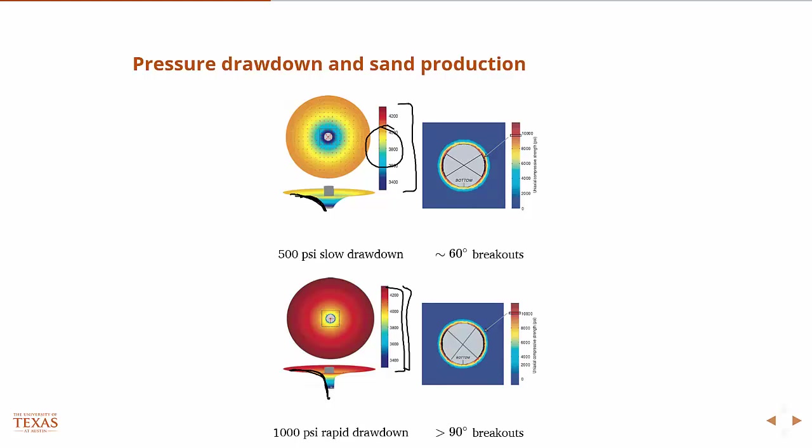And in those two cases, if you look at the failure of the wellbore and do a prediction of the breakouts via the failure model, then in this 500 psi slow drawdown case, you have something like on the order of breakouts that are on the order of 60 degrees. Versus over here, you have breakouts that are greater than 90 degrees. And so with more breakouts, the total volume of sand produced is going to be greater, of course.